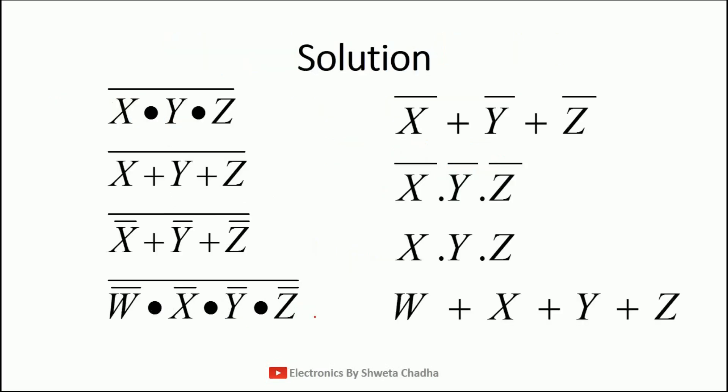So these are a few examples of De Morgan's theorem. The results are: x bar plus y bar plus z bar; x bar dot y bar dot z bar; x dot y dot z; and w plus x plus y plus z. These are examples in which I have applied De Morgan's theorem in the easiest manner.